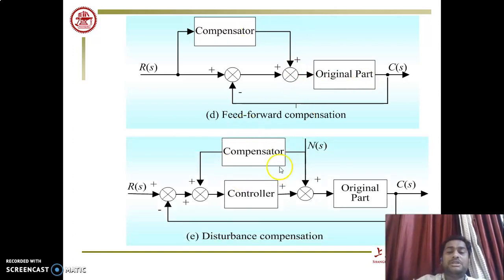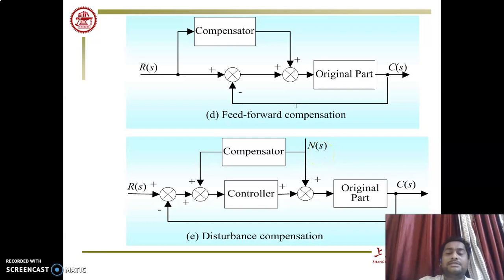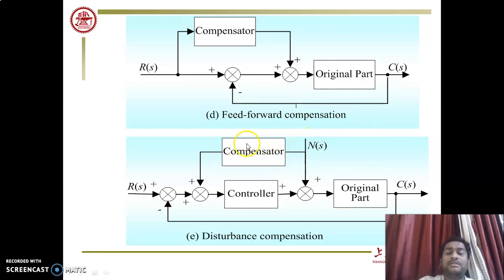In disturbance compensation, one disturbance — such as temperature effect on the ceiling fan — is considered. The compensator input is the disturbance N(s), and that disturbance is added into the controller and the original part. The original part or plant has its own gain or transfer function.